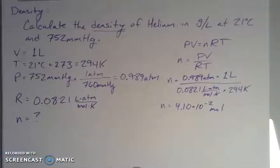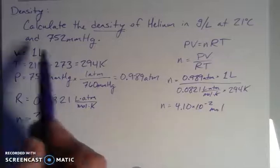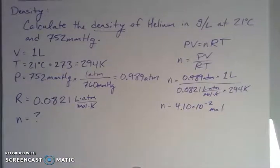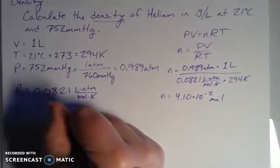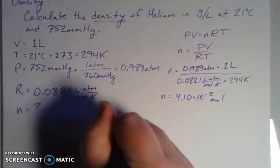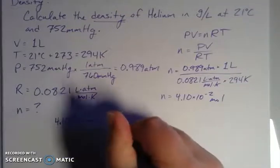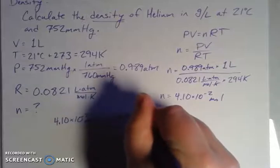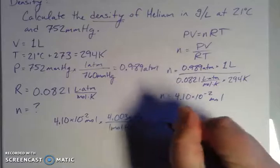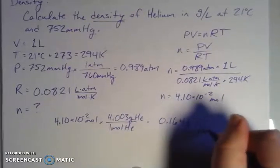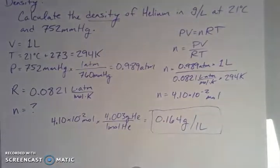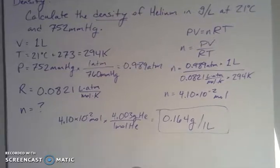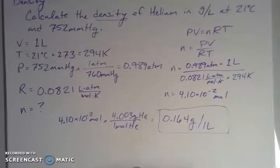The question asks for density in grams per liter, and we've already found moles per one liter. Now we convert moles to grams using the periodic table. For helium, one mole = 4.003 grams. That gives us 0.164 grams per liter — our density. That doesn't sound like very much, and it really isn't. Gas particles are small and spread out a lot, so you can have a large volume of gas without a large density of particles.